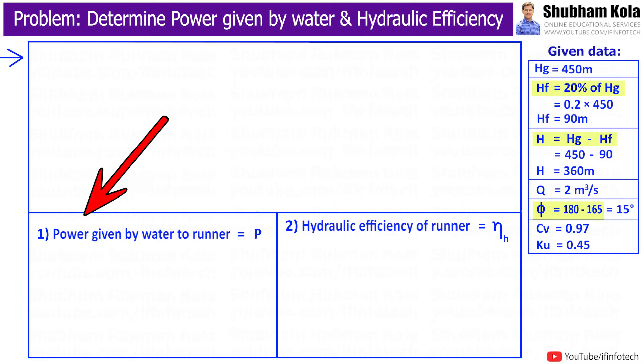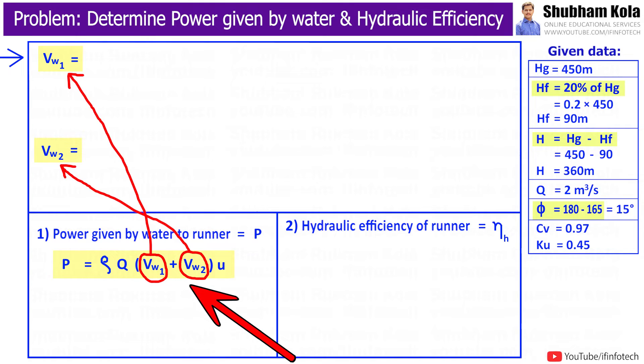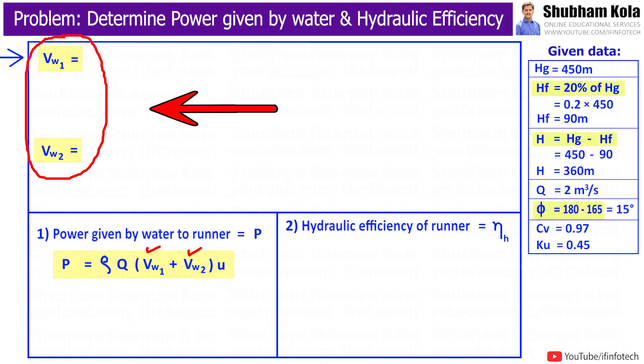In the second step, we will calculate power given by water to runner of turbine. It is given by this formula, where first we should calculate velocity of wheel at inlet and outlet, i.e., Vw1 and Vw2 we need to calculate.